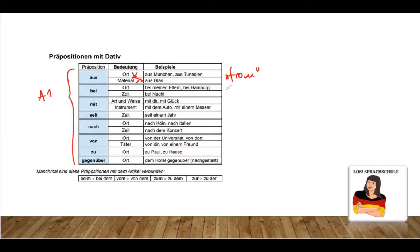Next one, bei. Bei is translatable a little bit like at. And we have here the first usage, which is Ort, place. Bei meinen Eltern. Bei Hamburg. So it is at my parents, at Hamburg. We cannot say, Ich komme aus meinen Eltern. Another one is for time, Zeit. Bei Nacht. At night.